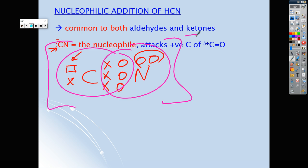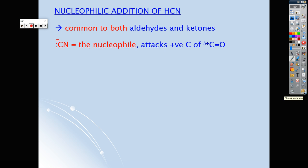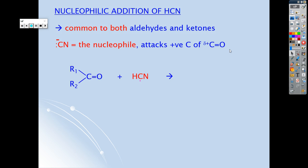The general reaction for this is very simple. Our aldehyde or ketone reacts with the hydrogen cyanide and we get a product which is called a hydroxynitrile. You can see that on the screen there now.